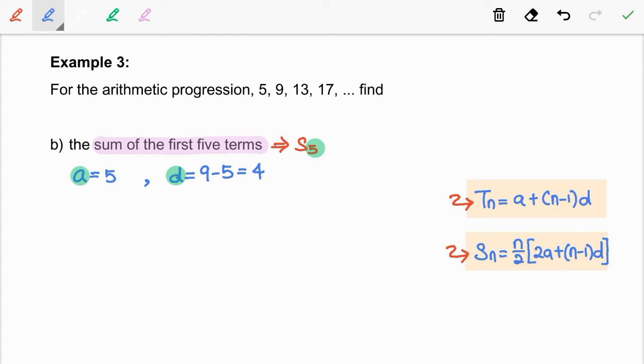So, we have S5 is equal to 5 over 2, 2 times 5 plus 5 minus 1 times 4. Let us further simplify this. So, the answer is 65. Well, that's it. Thank you.